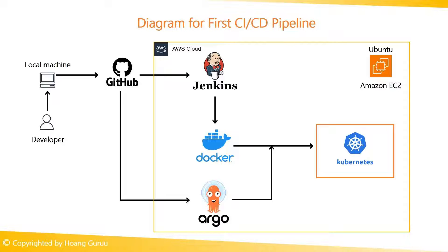Let's take a quick look at the diagram of our first CI/CD pipeline. A developer pushes code changes to GitHub, and our CI server detects the change in the repository. It triggers the build process with Docker. The image generated by Docker is then deployed using our CI/CD tool. Our application runs on Kubernetes clusters, providing scalability, resilience, and easy management.